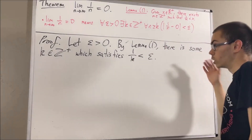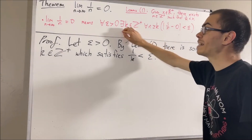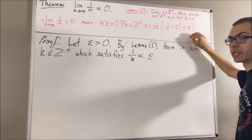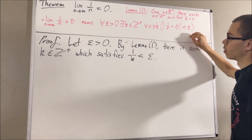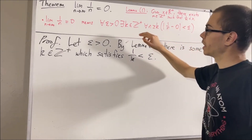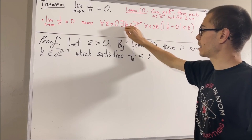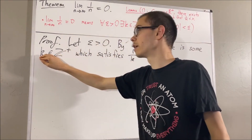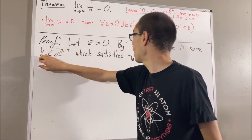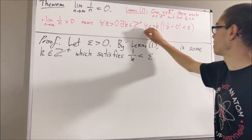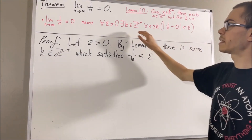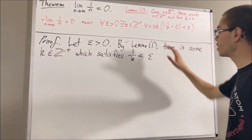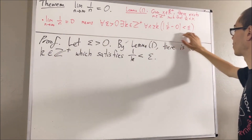Now remember, our whole goal is to find a positive integer which satisfies this statement. Well, our claim is that if we take k here to be the k we have in our proof, that k will satisfy this statement. So let's take k to be the k we have in our proof and proceed to prove this statement.